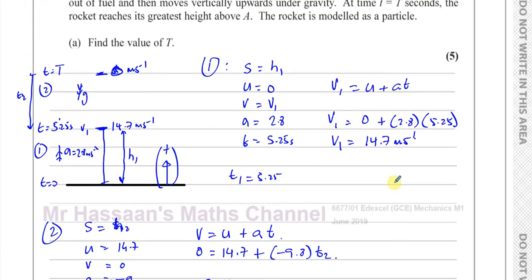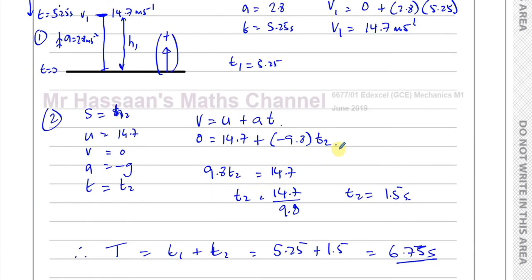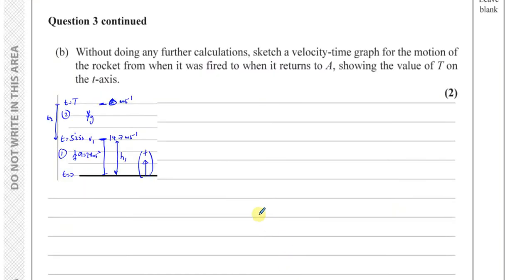There's the answer to this question. 5 marks for finding the value of T. Now for part B. It says, without doing any further calculations, sketch a velocity time graph for the motion of the rocket from when it was fired. Now please make sure you read the question. To when it returns to A. So it's not just a velocity time graph for what's shown here, also for its return back to the point A, which is where it started from. So it's very important that you read these questions carefully.